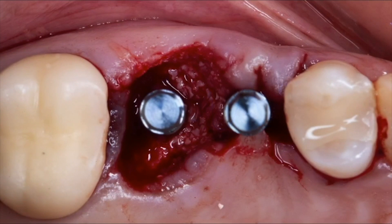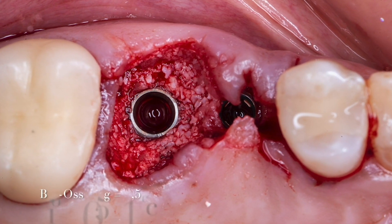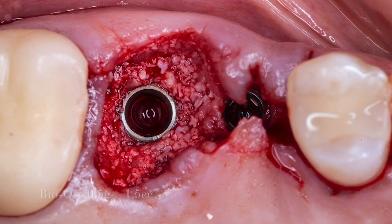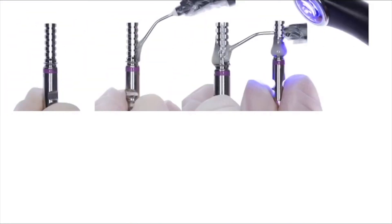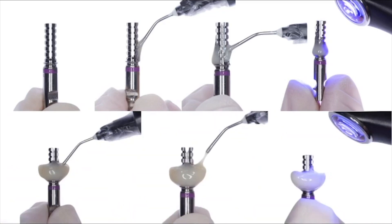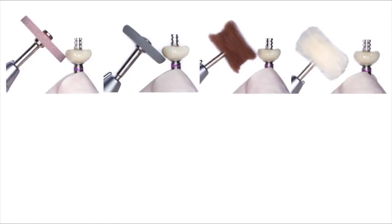We proceeded with the installation of the implants side by side, in the ideal three-dimensional position, and then filled the gap with BIOS. The flowable resin is applied around the healing abutment in a small amount and light-cured. In order to prevent contact with the graft bone, we can do this outside the mouth. Polishing and finishing procedures are then carried out.